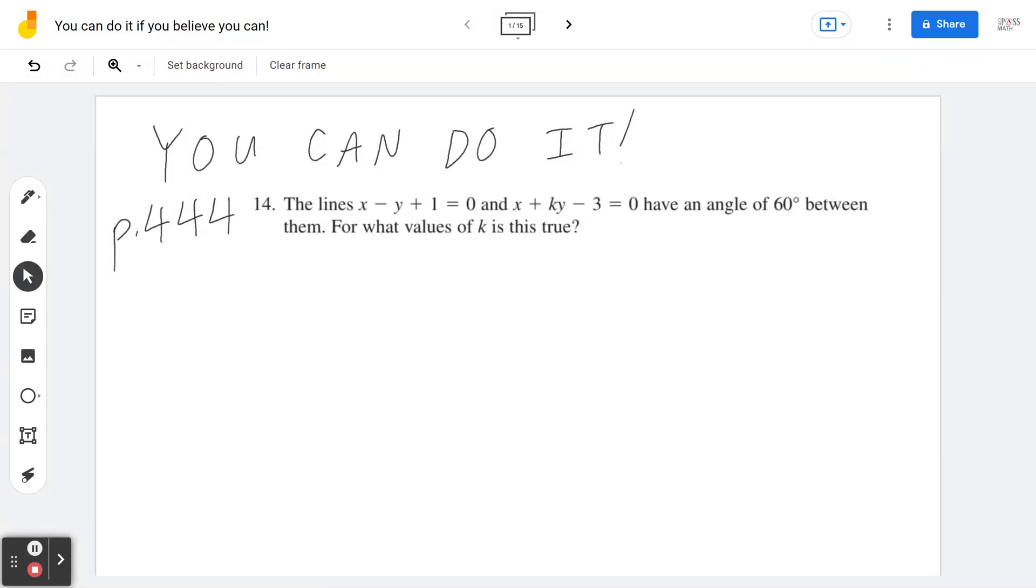Hi everyone, let's take a look at number 14 on page 444 for grade 12 calculus and vectors. The lines x minus y plus 1 equals 0 and x plus ky minus 3 equals 0 have an angle of 60 degrees between them. For what values of k is this true?